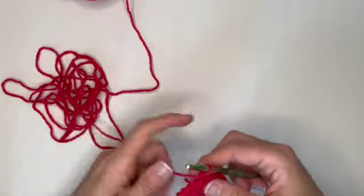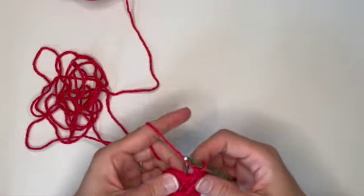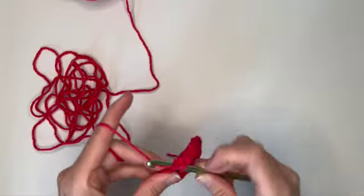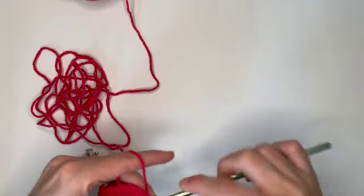All right, and now we're going to do another slip stitch into that chain space. All right, so here's row number two.